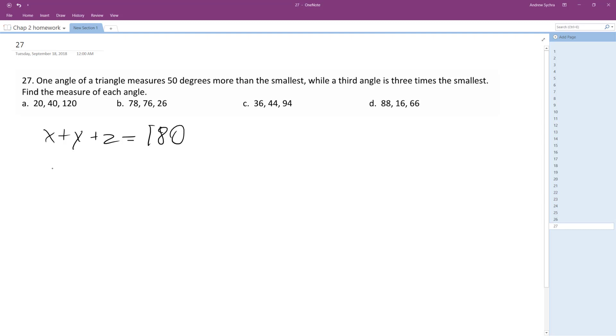So one angle measures, alright, so X is equal to Z plus 50. We'll just call the smallest angle Z. While the third angle is three times larger than the second, alright, so Y is equal to 3Z.